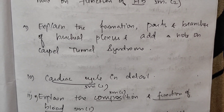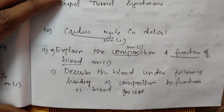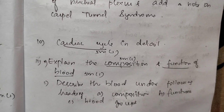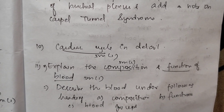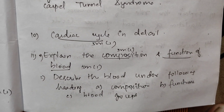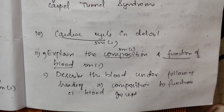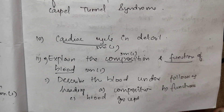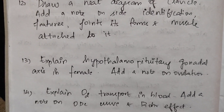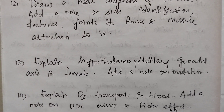Explain the formation, parts, and branches of the brachial plexus and add a note on carpal tunnel syndrome. Next, draw a neat diagram of the clavicle and add a note on its side identification features, joints it forms, and muscles attached to it.